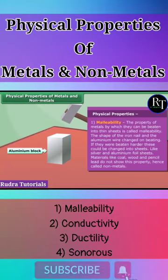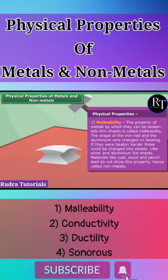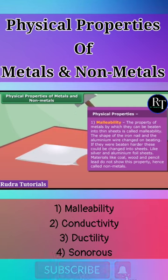At first, we know about the physical properties. The first property of metal is its malleability. By this property, the metals can be beaten into thin sheets. Non-metals don't show this property.